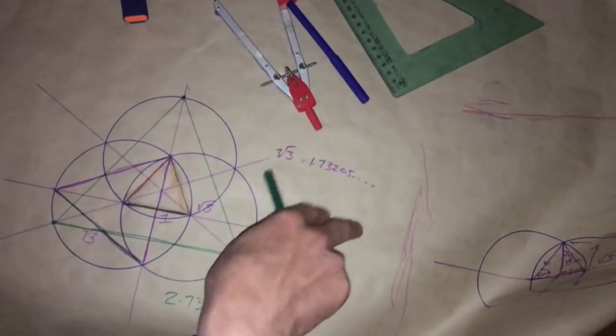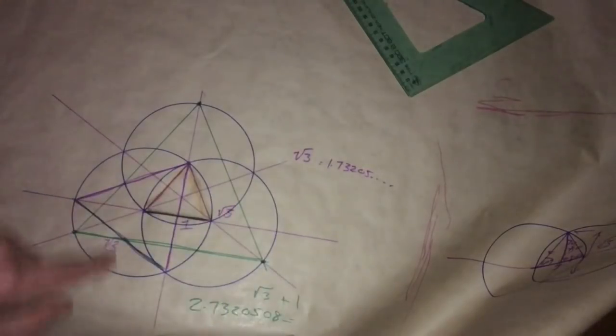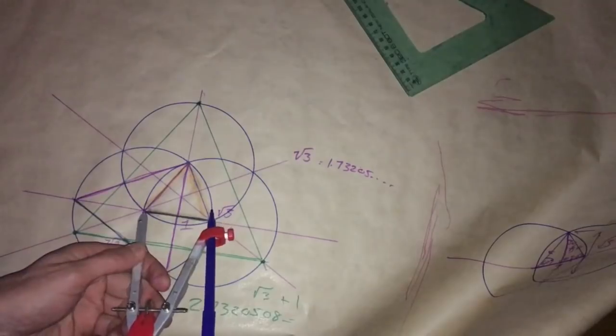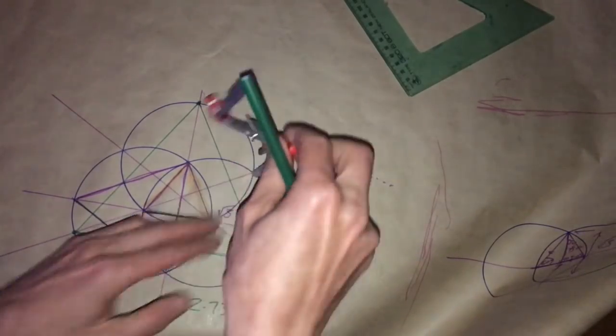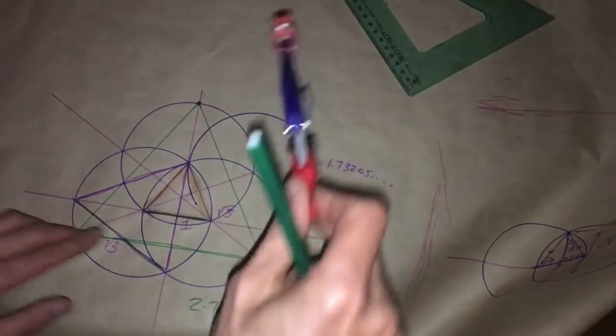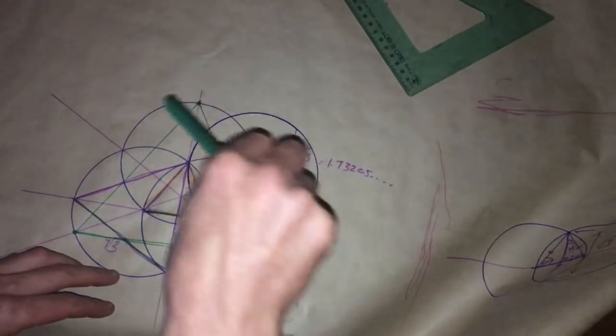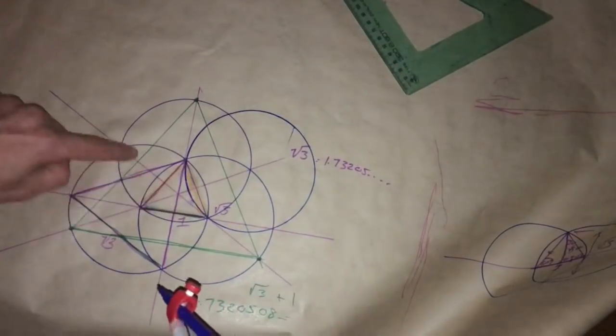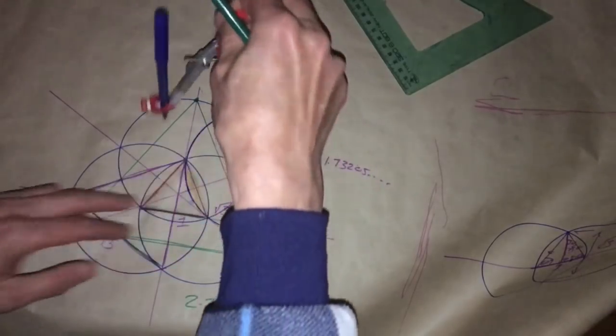Now we'll be able to fit this into shot. Okay so now vesica to Trinity and we're still at the same setting, and now we can do the seed of life. Now we just keep going around.